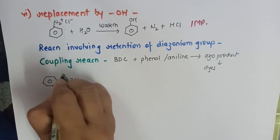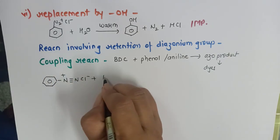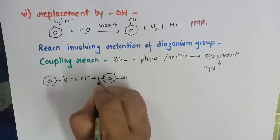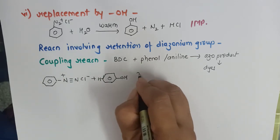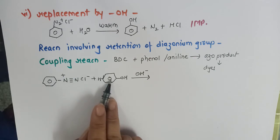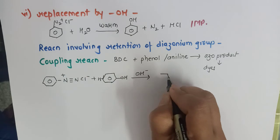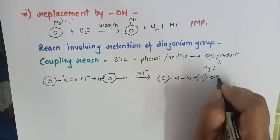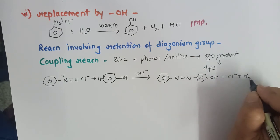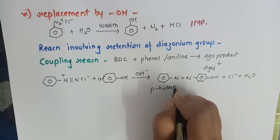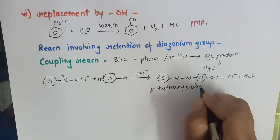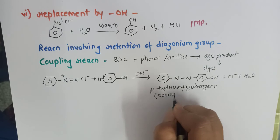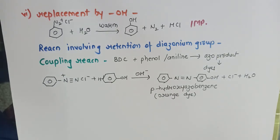First coupling reaction: BDC when treated with phenol — hydrogen is removed in the presence of basic medium — the two groups get coupled through the azo group. Chloride and HCl along with H2O are removed. The product is para-hydroxy azobenzene, which is an orange colour dye. This experiment is generally carried out in the lab under the heading 'detection of functional group'.